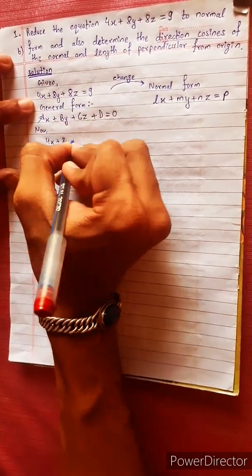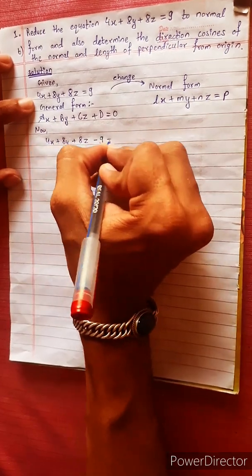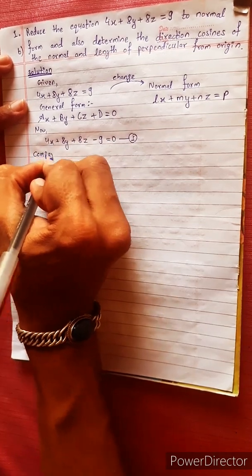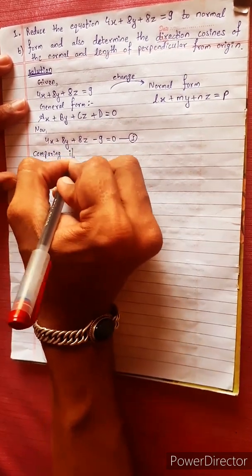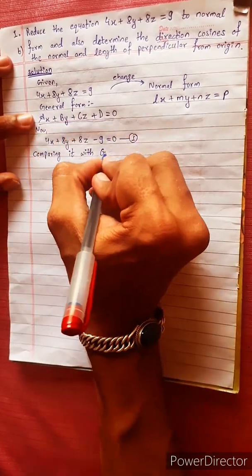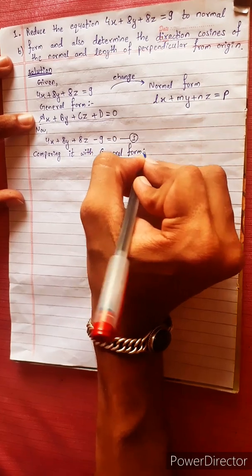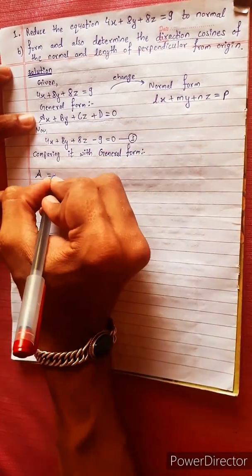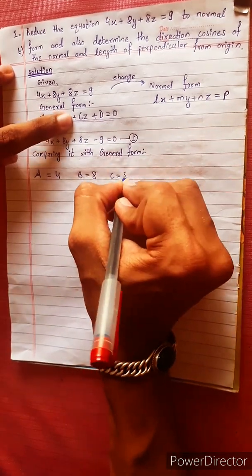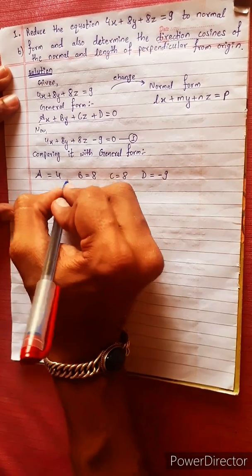Rewriting: 4x + 8y + 8z - 9 = 0. Comparing this with the general form ax + by + cz + d = 0, we get a = 4, b = 8, c = 8, and d = -9.